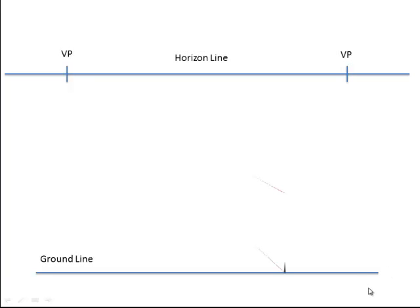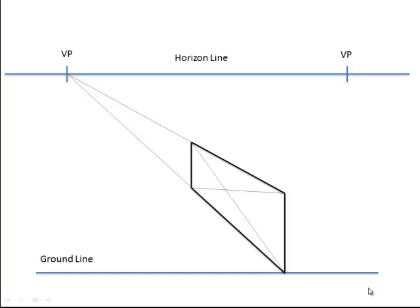First of all we are going to construct a simple rectangle and vanish it back to a vanishing point. Then we are going to cross the two diagonals. This gives us the centre of our rectangle.